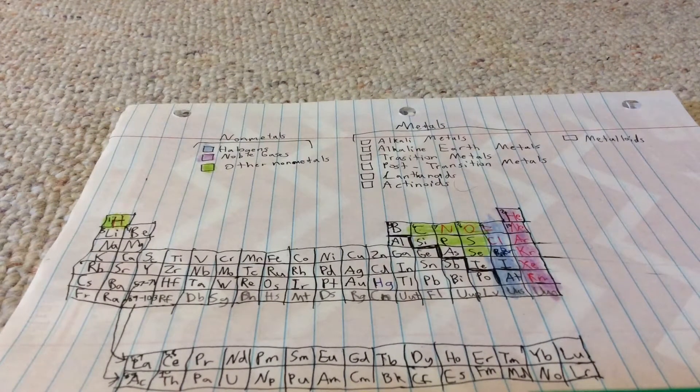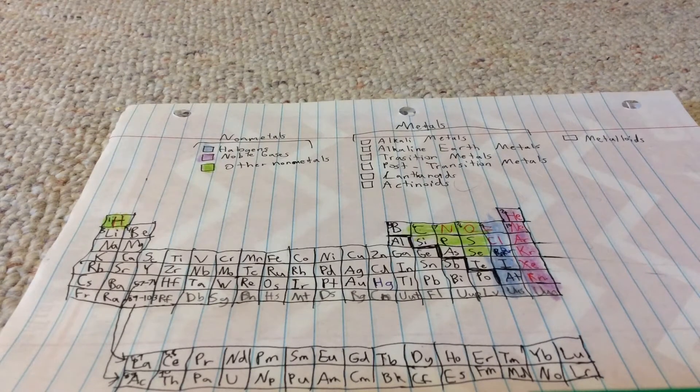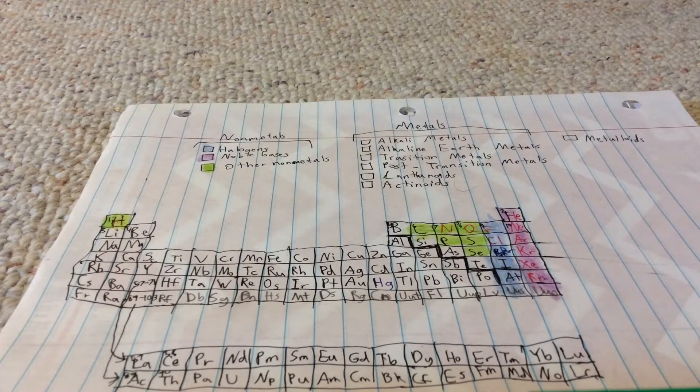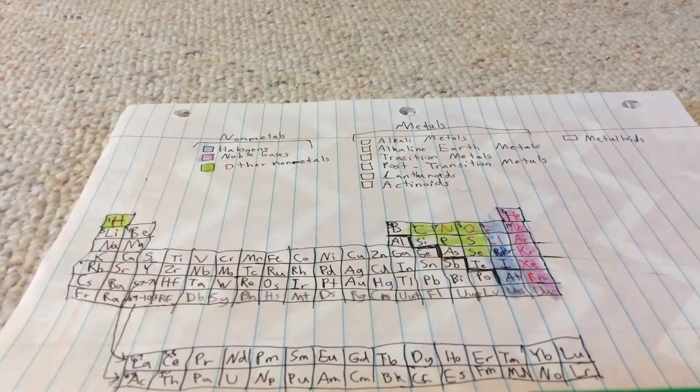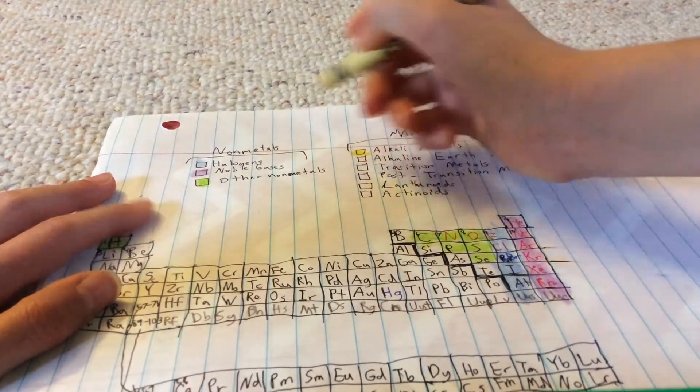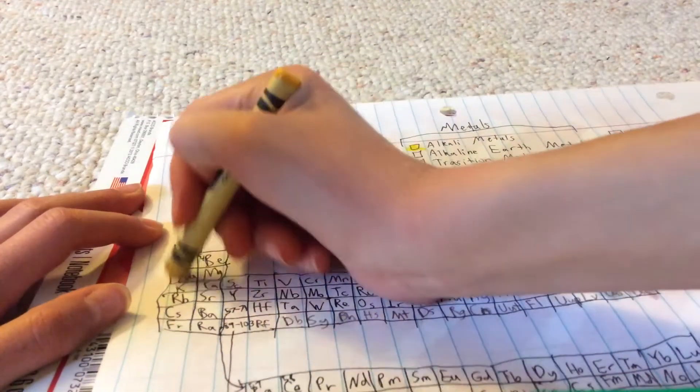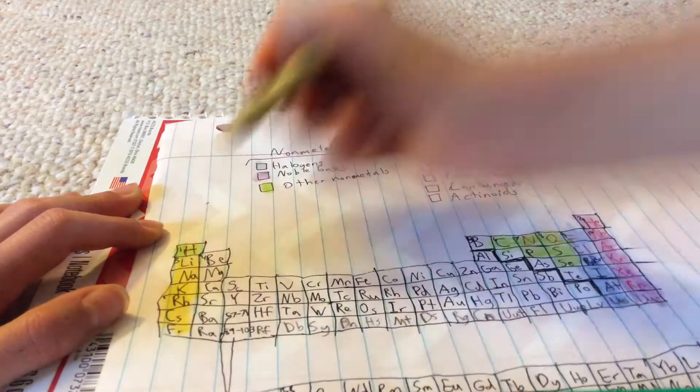But we still have boron, silicon, arsenic, and tellurium. I'll show you why we still have those. Now on to the metals. We're gonna make those yellow dandelion. The alkali metals are right here, lithium to francium.